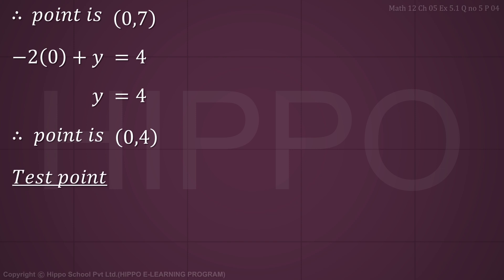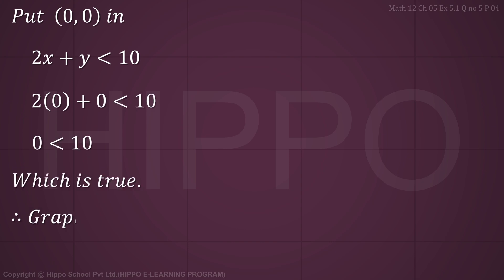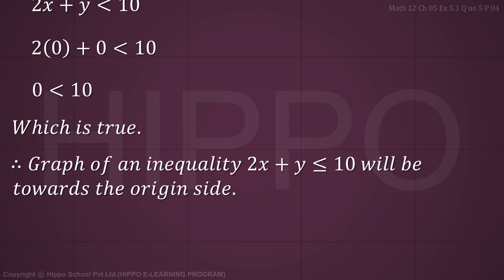Now we apply the test point (0, 0). Put 0, 0 in 2x plus y less than or equal to 10: 0 plus 0 equals 0, which is less than 10 — this is true. So the graph of the inequality 2x plus y less than or equal to 10 will be towards the origin side.